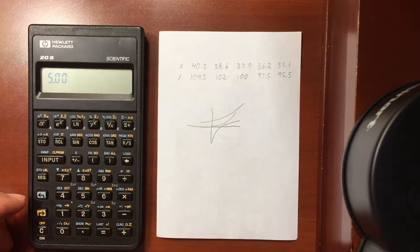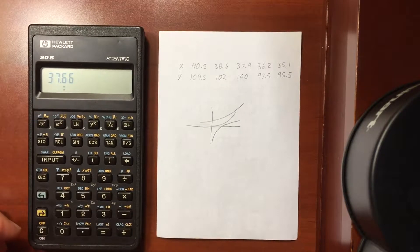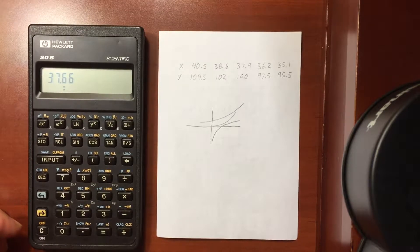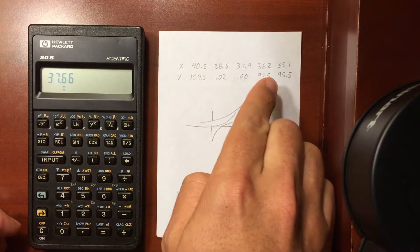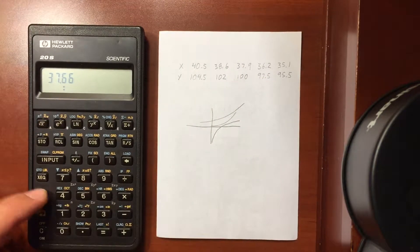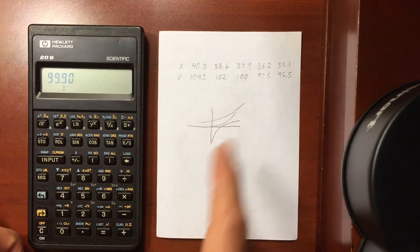If I want to see my X and Y averages, the mean, that is the mean of my X values. If I swap here, the annunciator showing me there's another number in the other register - that is the mean of my Y values.